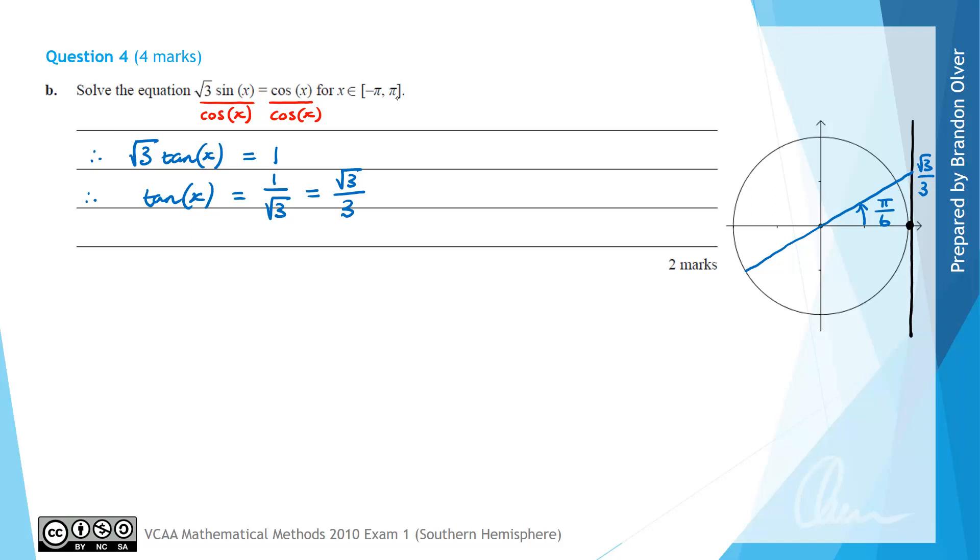However, that's outside of the domain, so we need to go the negative direction, and we would find that this is a second solution, and that would be minus 5 pi on 6. So that means that our x values that satisfy this equation are going to be pi on 6, so that was the first positive angle that we found, and then the second value would be x equals minus 5 pi on 6. So these are the two values between negative pi and pi that satisfy the given equation in this question.